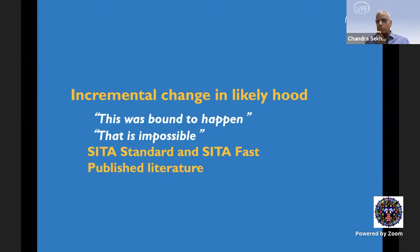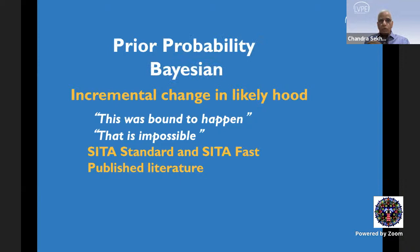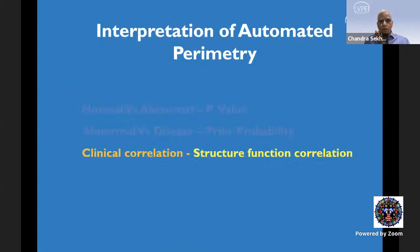The incremental change in likelihood of something happening based on clinical examination — whether the abnormal visual field is likely to indicate glaucoma or not — is the Bayesian prior probability. For that, we need to get into structure-function correlation.